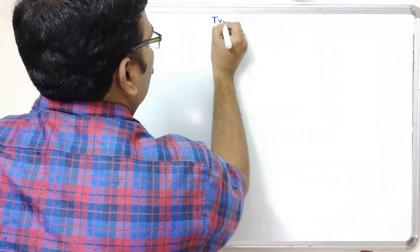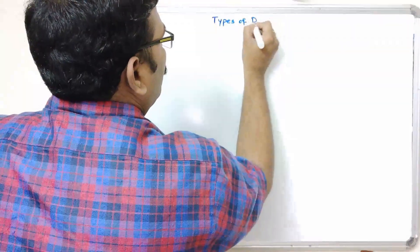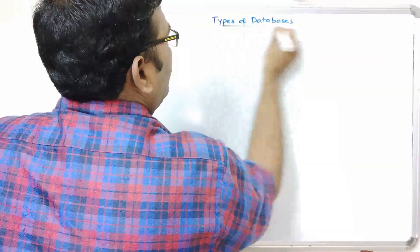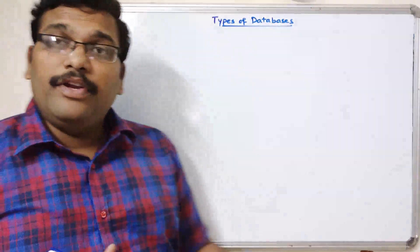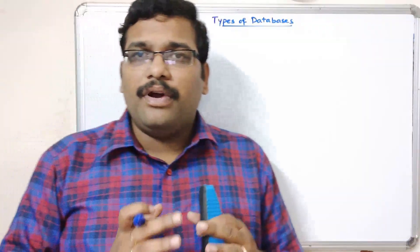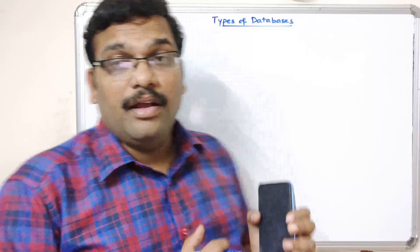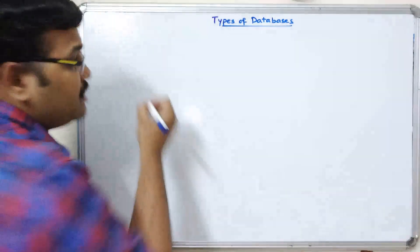Hello friends, welcome back to our channel. In the previous session we covered the introduction to database management systems — what is data, what is information, and what is a database. In today's session we'll cover a small concept: the different types of databases. A database is a collection of large data in a single space.